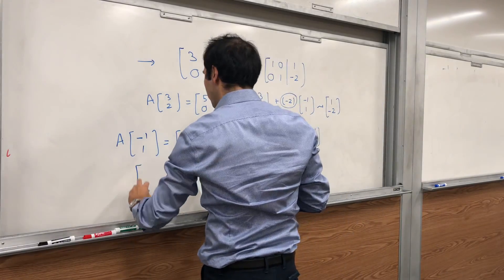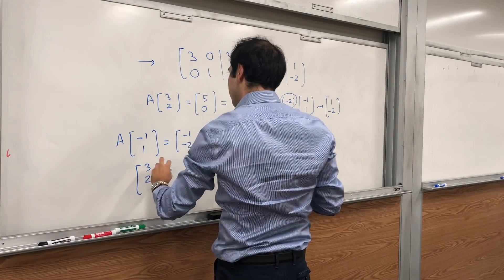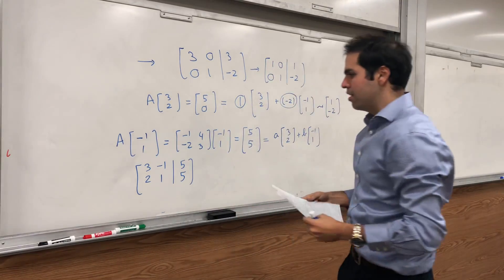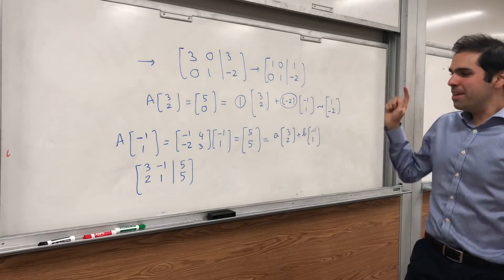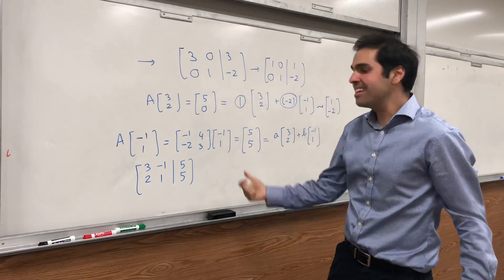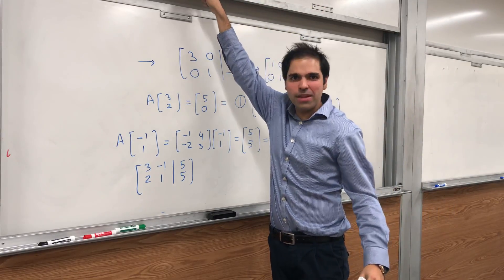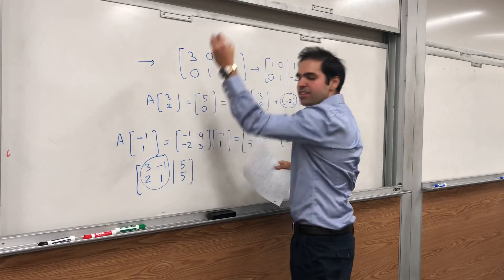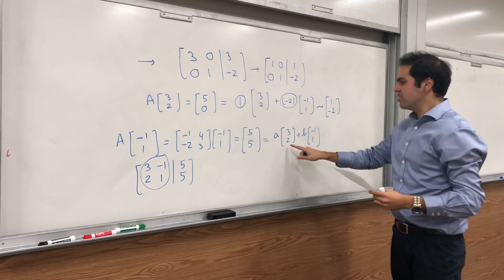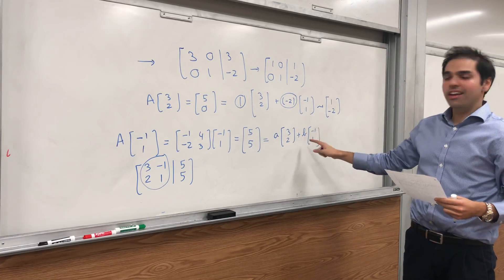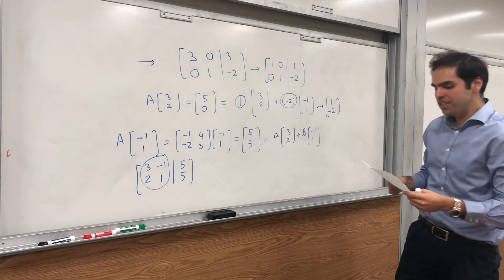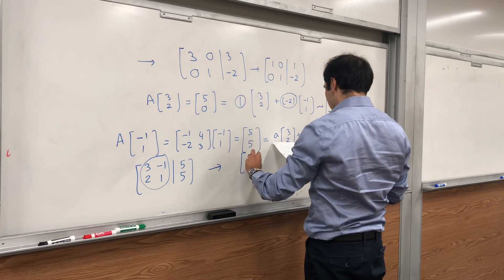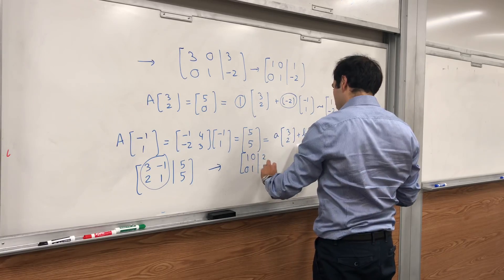And just as before, you just need to row reduce the matrix [3, -1; 2, 1 | 5, 5]. And I'm not going to do this again, because it turns out it's the exact same process. You use the exact same row reductions, because notice, this matrix is actually the same as before, and it's just a matrix formed by putting the columns of B together. So if you do that, after a while you should get [1, 0; 0, 1 | 2, 1].